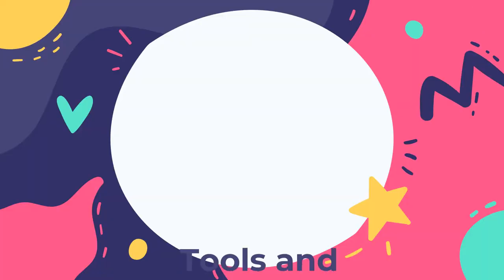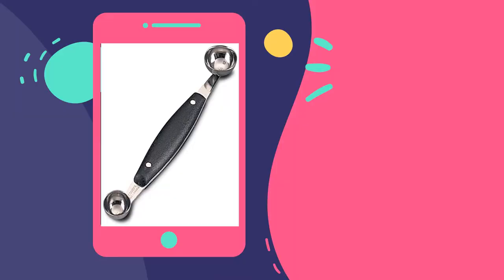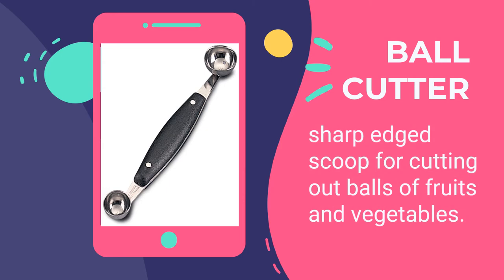Moving on to the different tools and equipment needed in preparing appetizers. We categorize them as measuring tools, baking tools, cooking tools, mixing tools, and auxiliary tools. The first kitchen tool is the ball cutter — a sharp-edged scoop for cutting out balls of fruits and vegetables. Also known as a melon ball cutter, it can cut potato balls sautéed until golden brown, or used to make balls of cheese for appetizers.